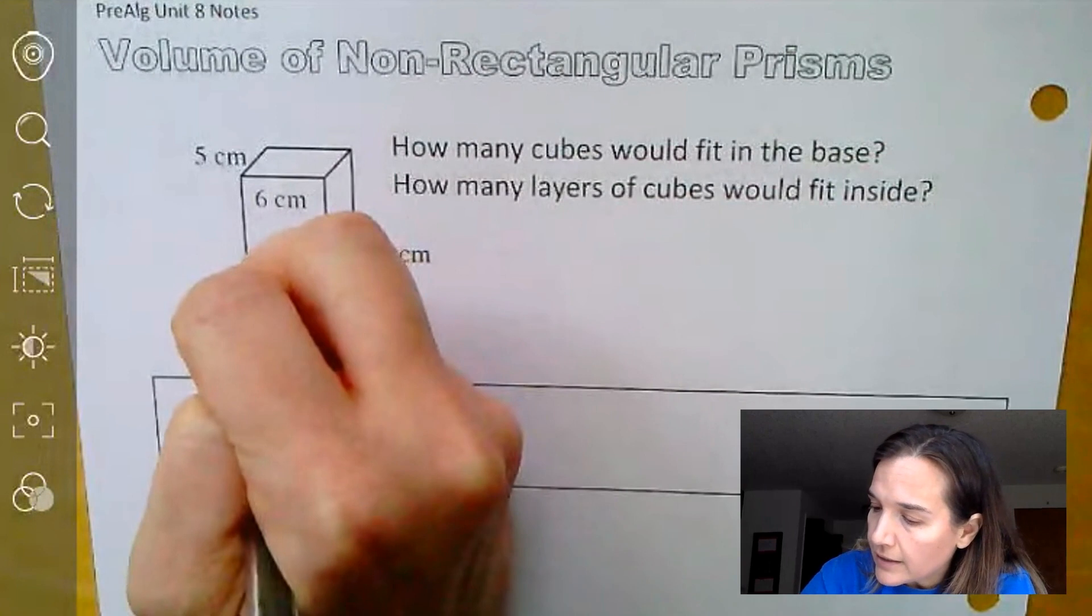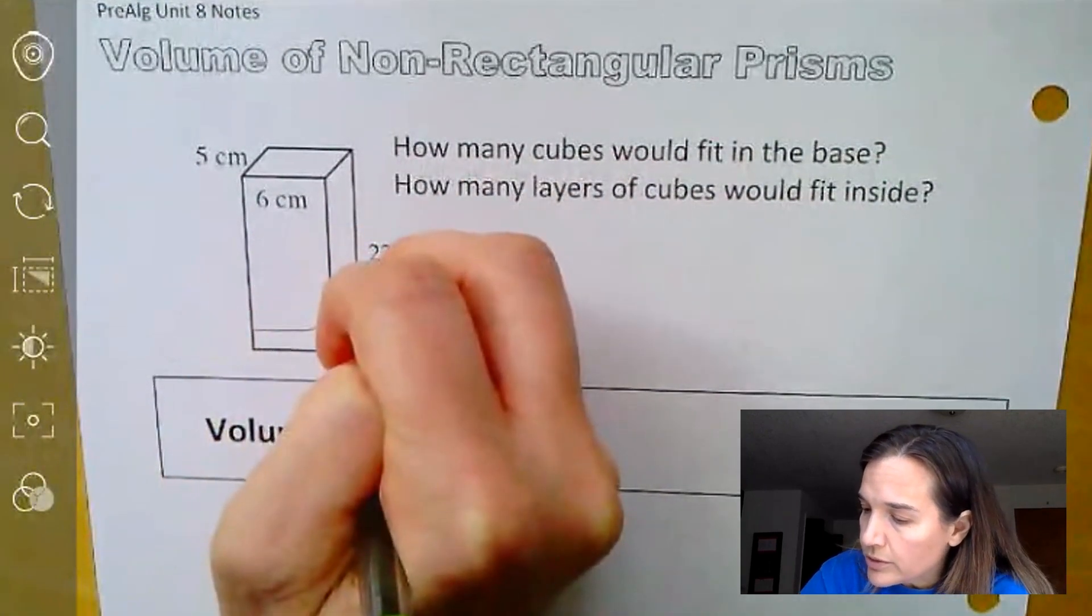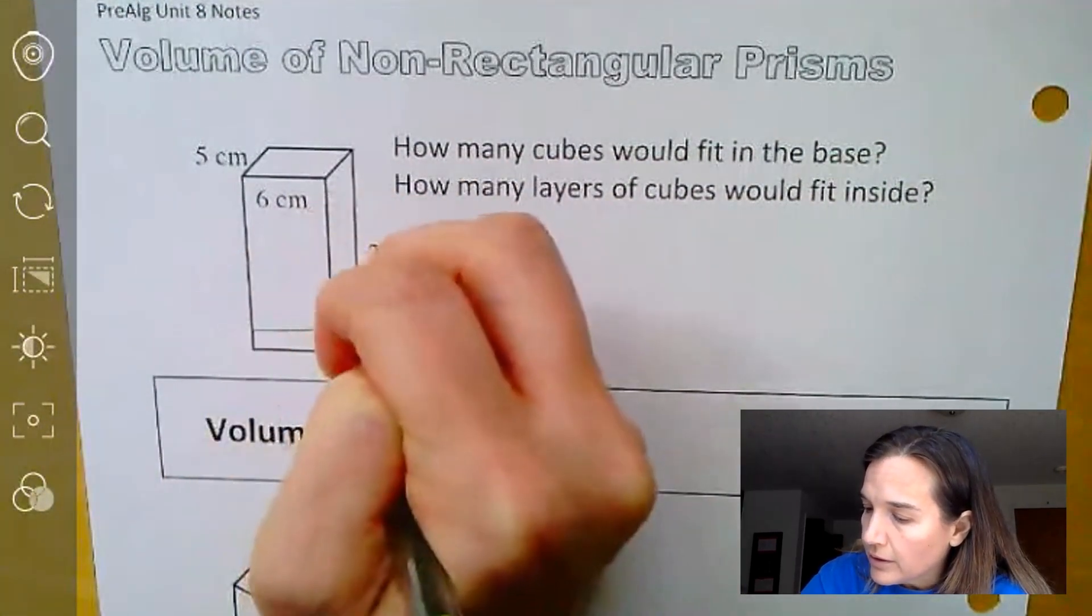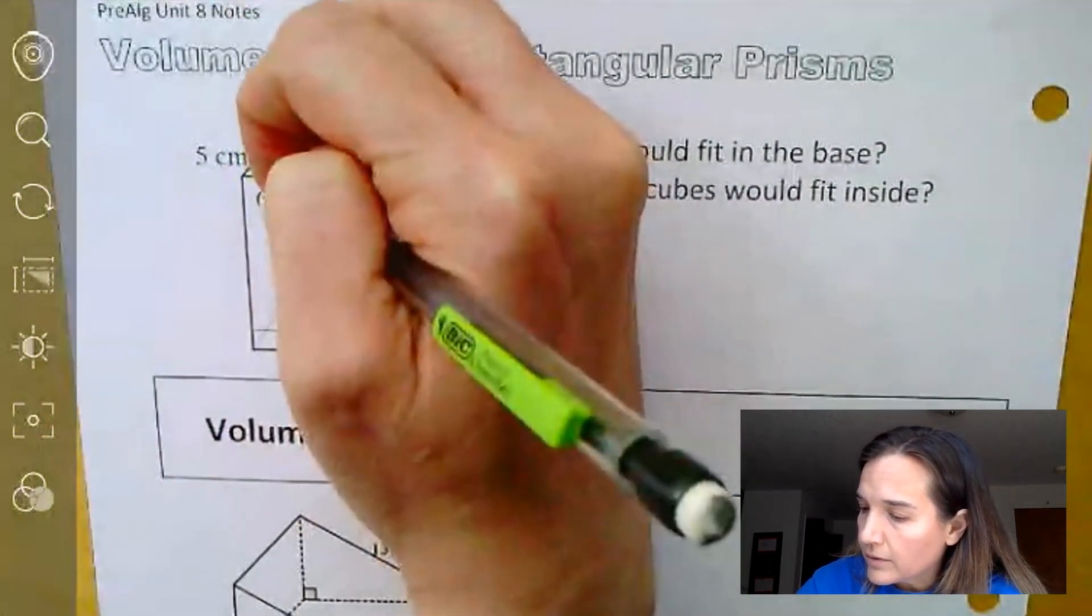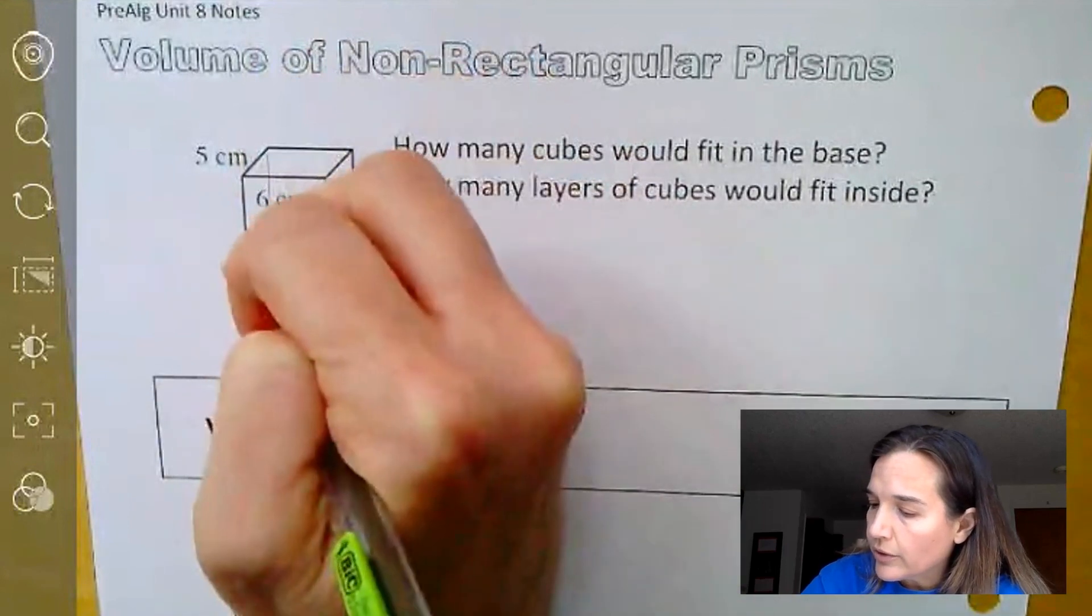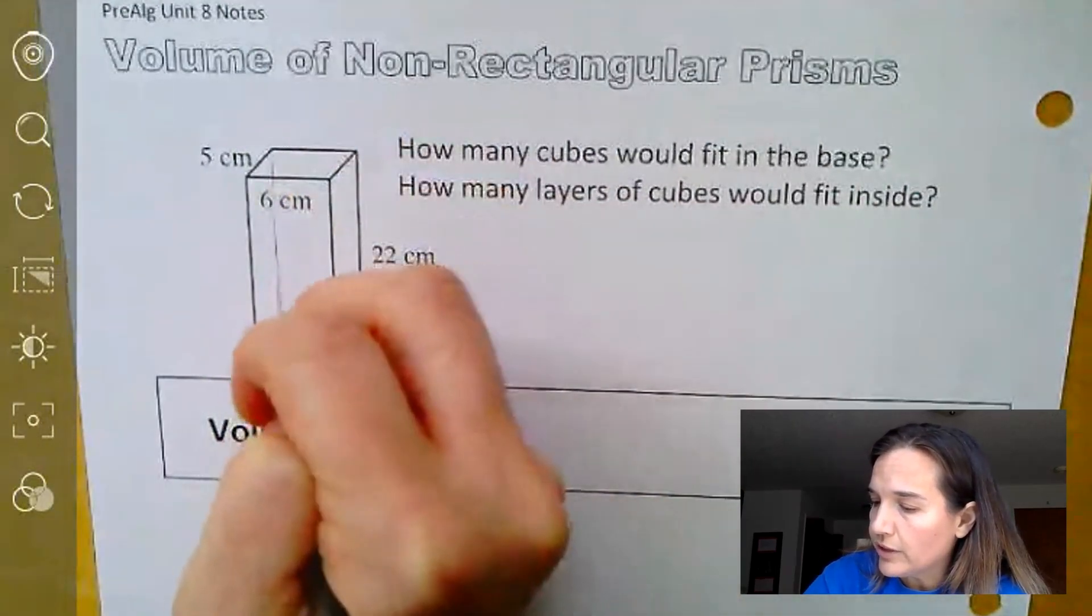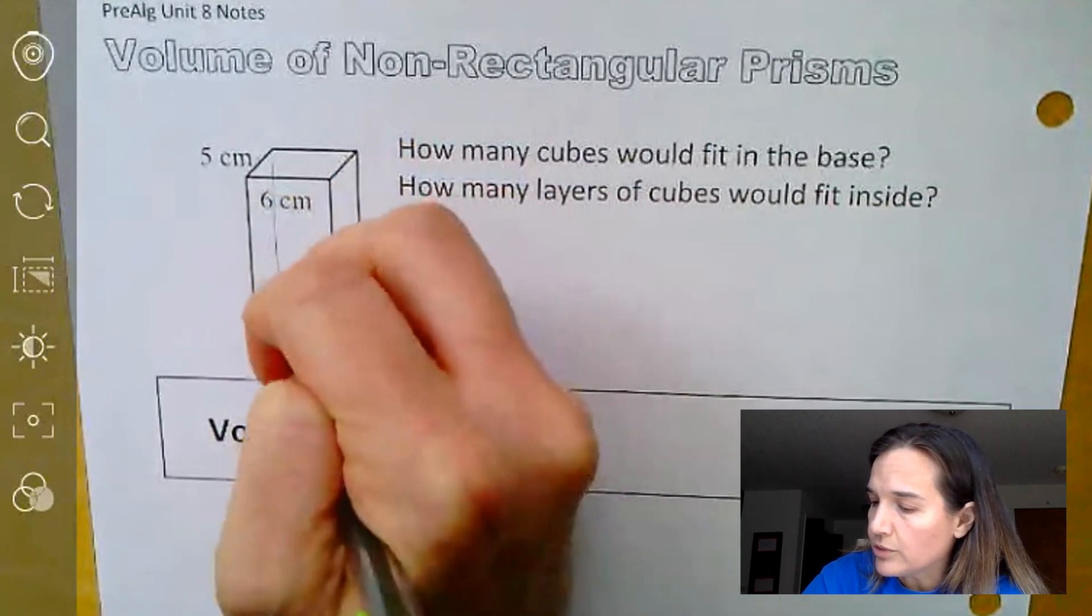One way to look at it is if we had a bunch of little cubes and we put them in here, we want to know how many cubes would fit if we could fit a bunch of cubes in here.